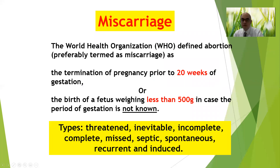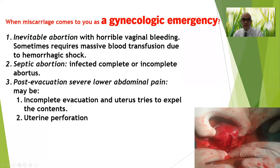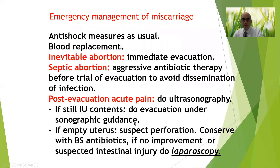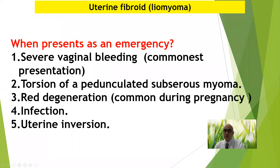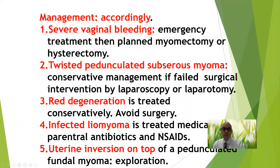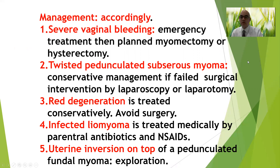Another cause of acute pelvic pain with positive pregnancy test is miscarriage in its different forms — don't ignore pregnancy testing for these cases. Also, acute pelvic pain with uterine enlargement due to fibroid may present with acute pain due to degeneration, torsion of a pedunculated subserous myoma, uterine inversion, and some vaginal bleeding. Fibroid complication during pregnancy — red degeneration — is treated medically; no need for surgery in pregnancy.